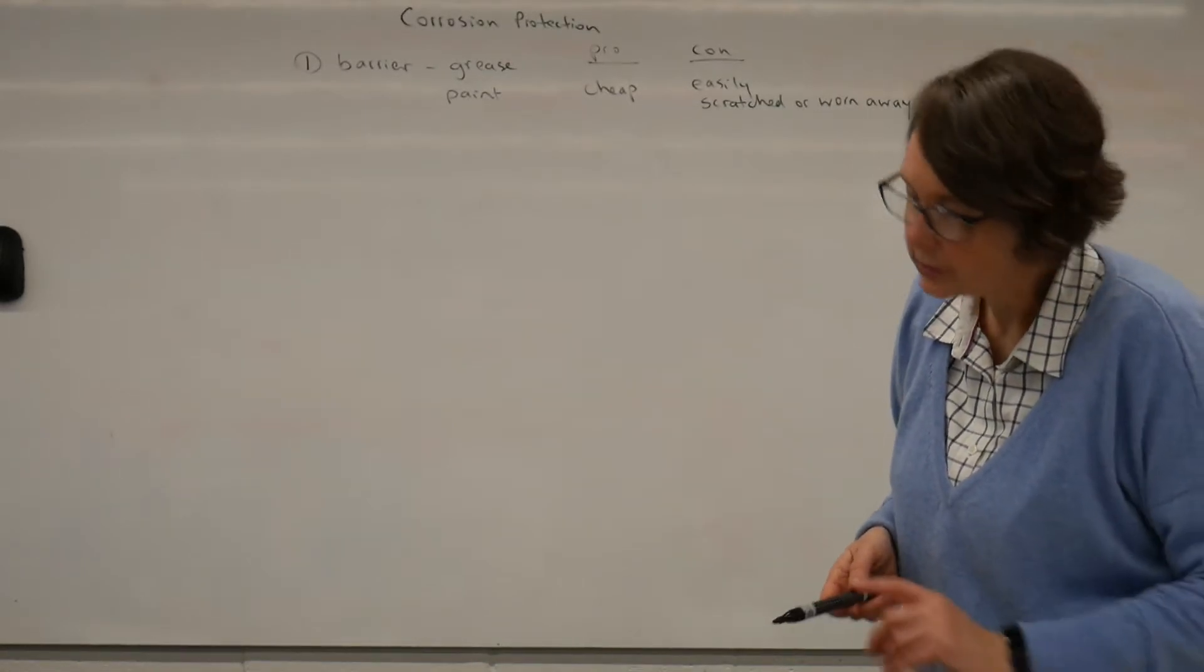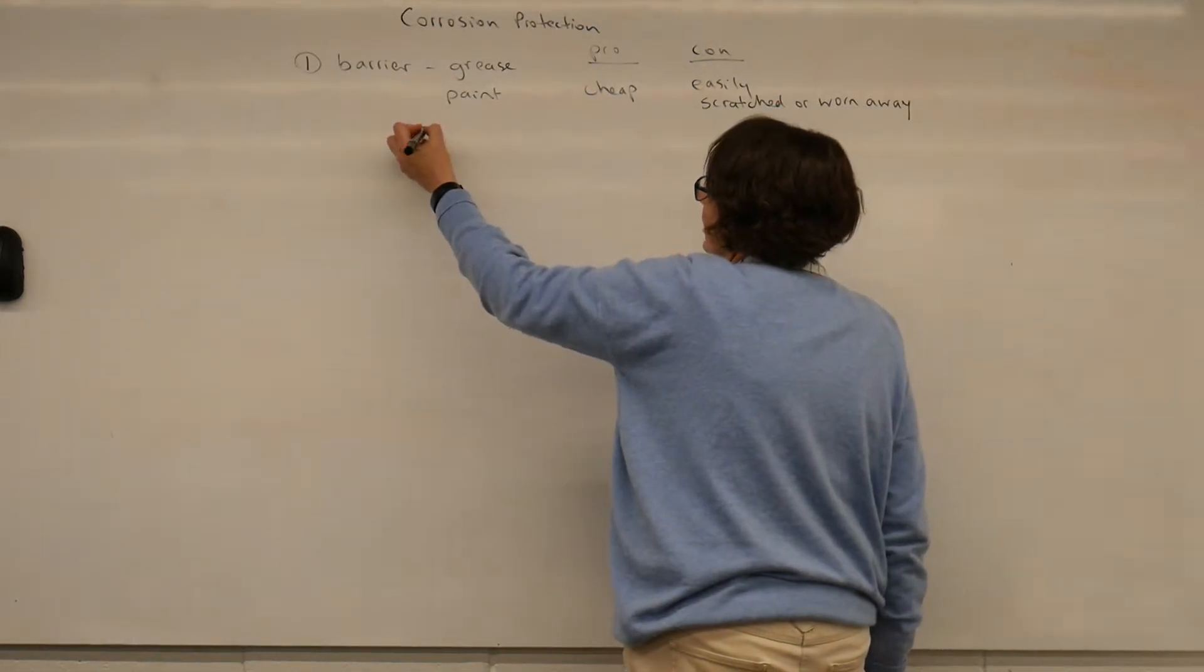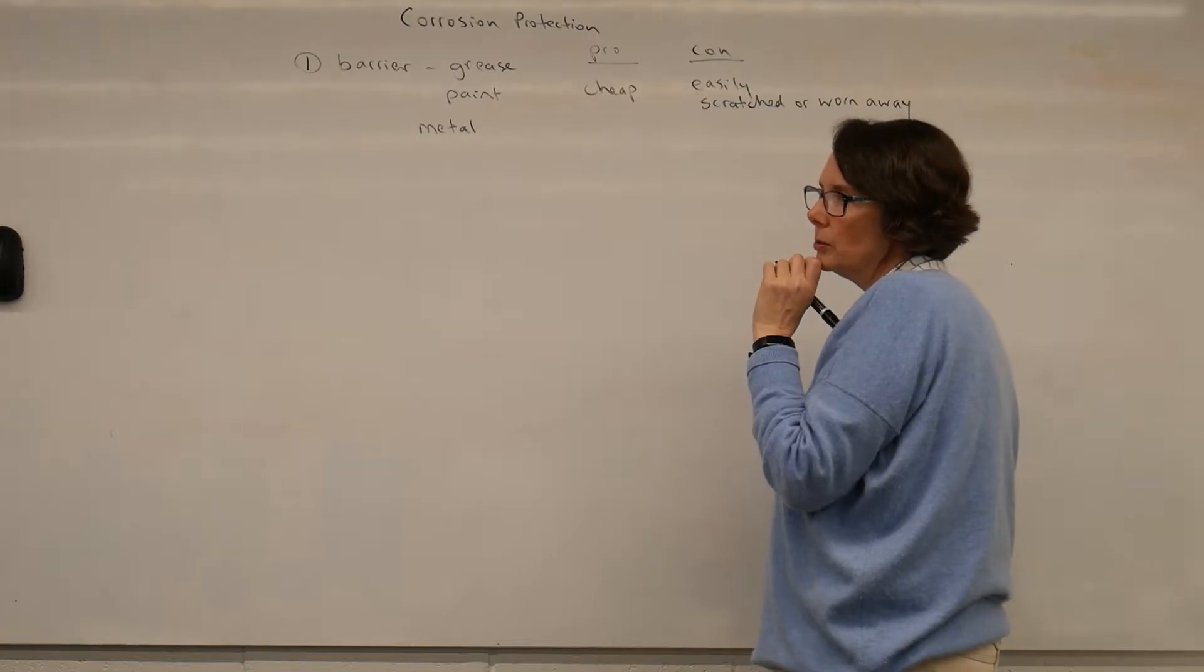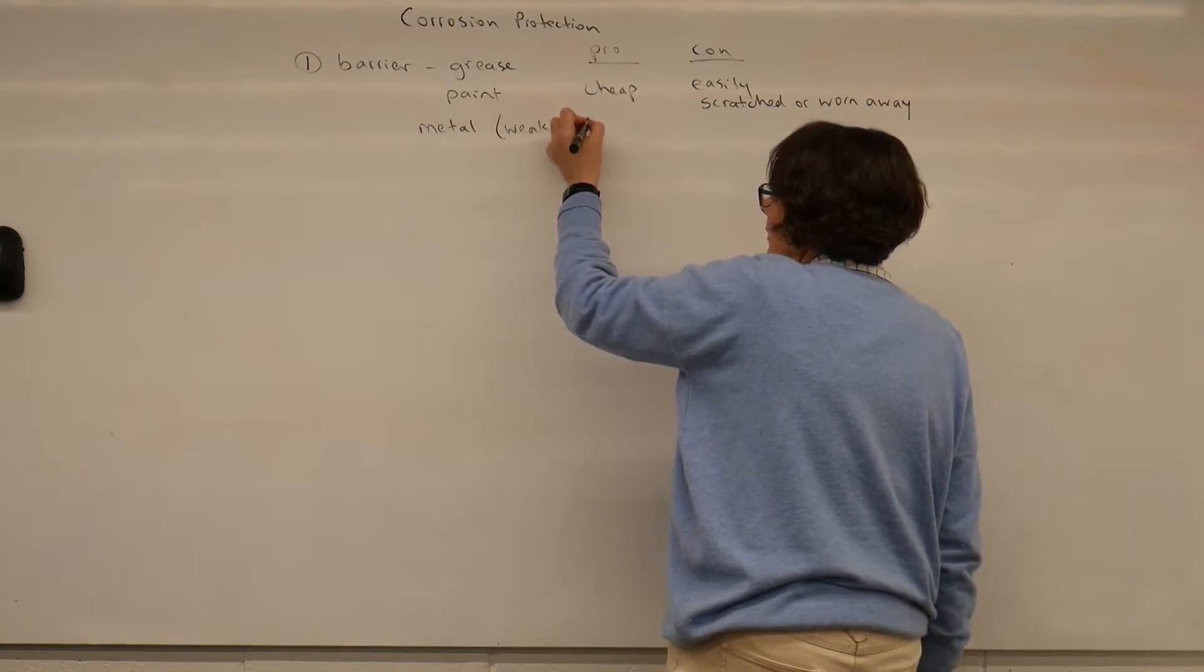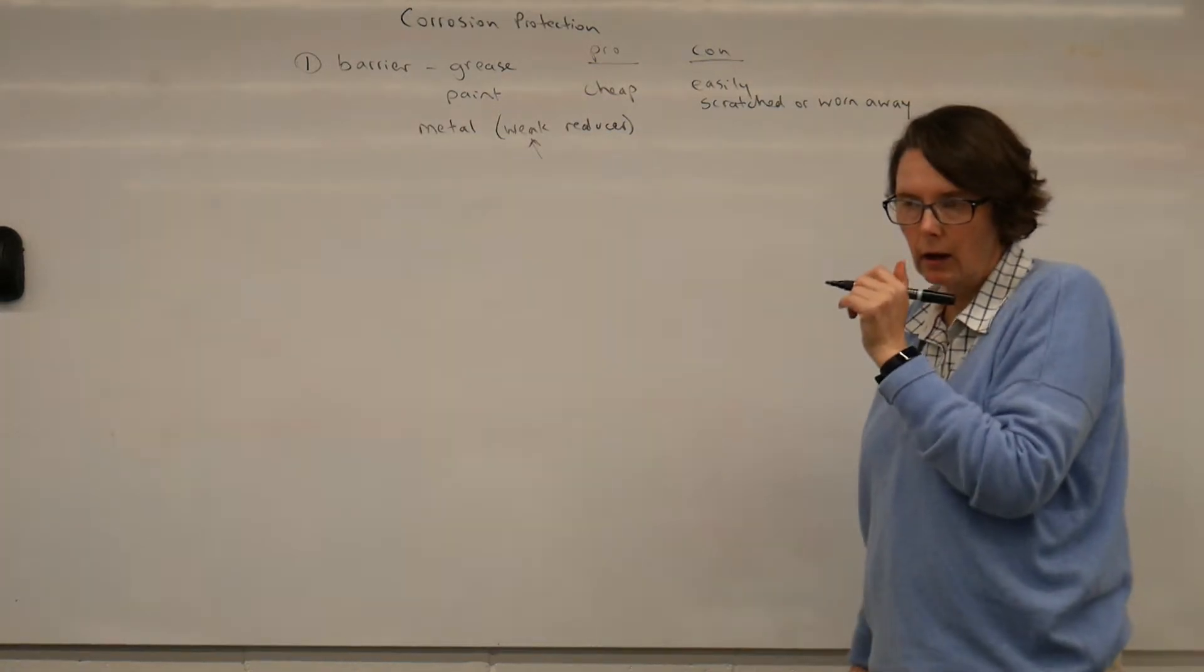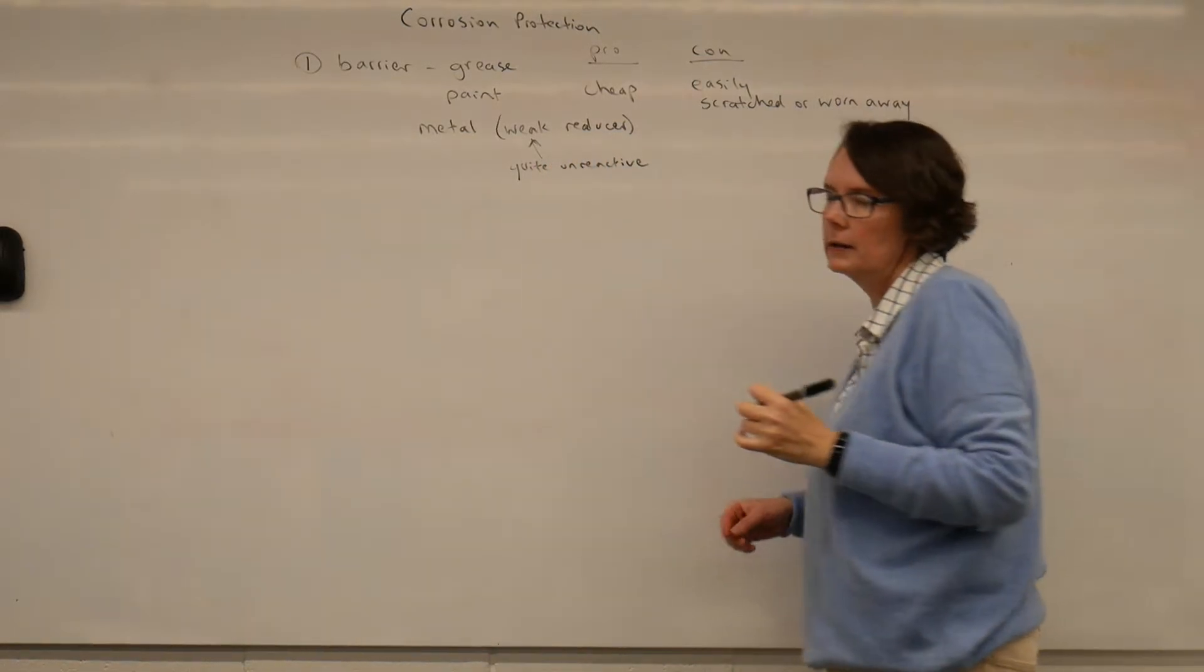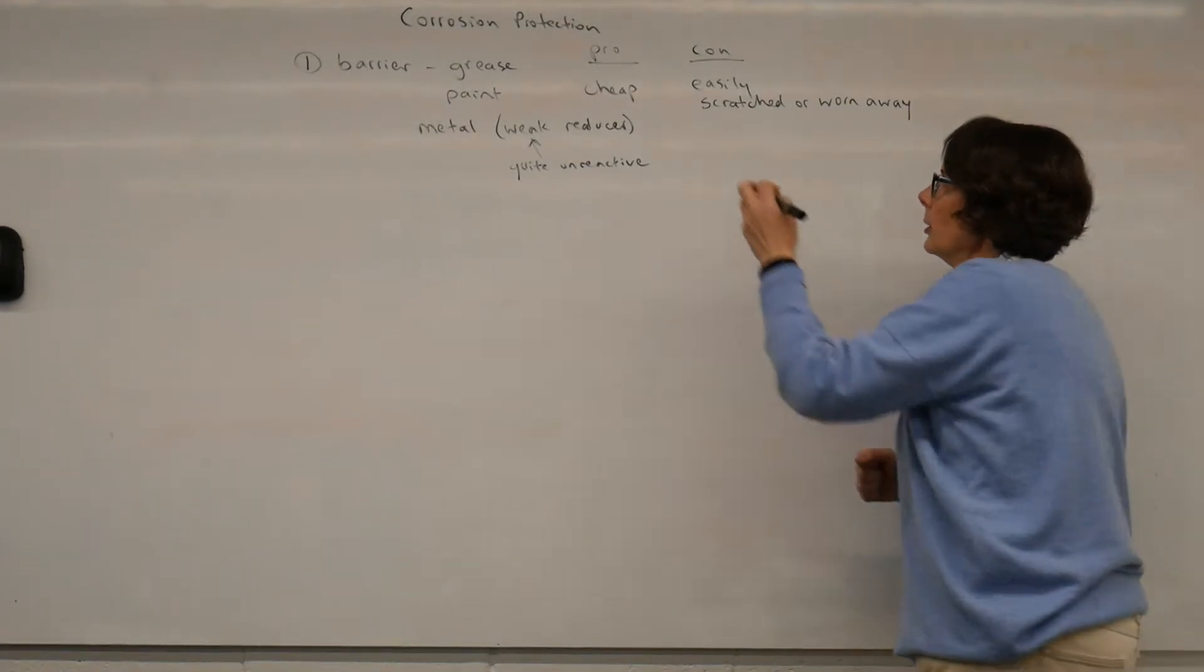Another way where we can protect it... Ah, another barrier. We can use a metal as a barrier. But in this case, we are going to use a weak reducer. Because weak reducers are quite unreactive.